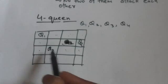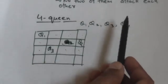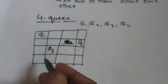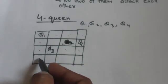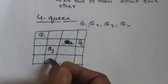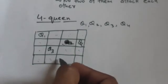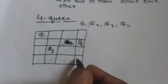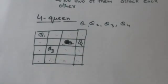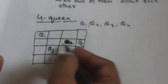Now we have to place queen Q4 in the fourth row. If we put it in the first square it will be attacked by Q1. If we put it in the second or third square it will be attacked by Q3. And if we put it in the fourth square it will be attacked by Q2. So for queen Q4 we don't have any valid option.